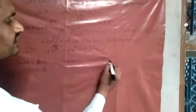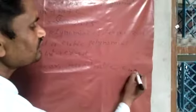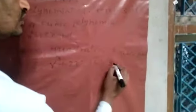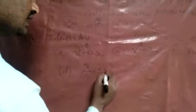Homework: classify the following as linear, quadratic, or cubic polynomials. (a) x squared plus 2x, (b) r cubed plus 2r, (c) 2x plus 3, (d) x cubed plus 2x squared plus 3x plus 7, (e) 5. Classify each as linear, quadratic, or cubic polynomial.